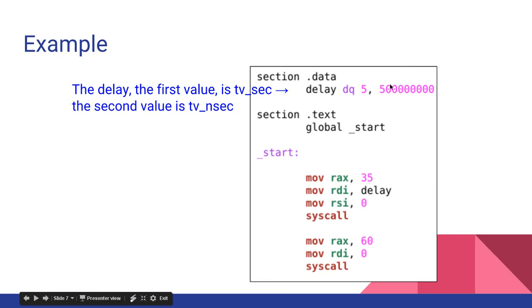The first is tvsec and the second is tvnsec. So, I'm saying five seconds and then 500 million nanoseconds. So this delay is equal to five and a half seconds.